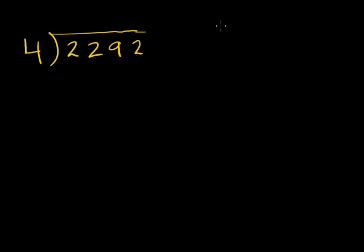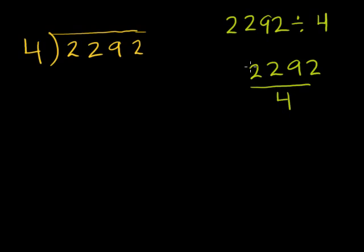And just as a bit of review, this is the same thing as 2,292 divided by 4. And it's actually the same thing, and you probably haven't seen this notation before, as 2,292 divided by 4. These are all equivalent statements on some level.